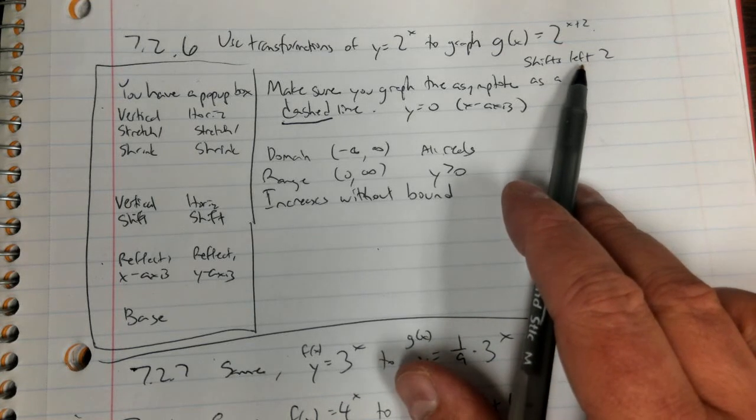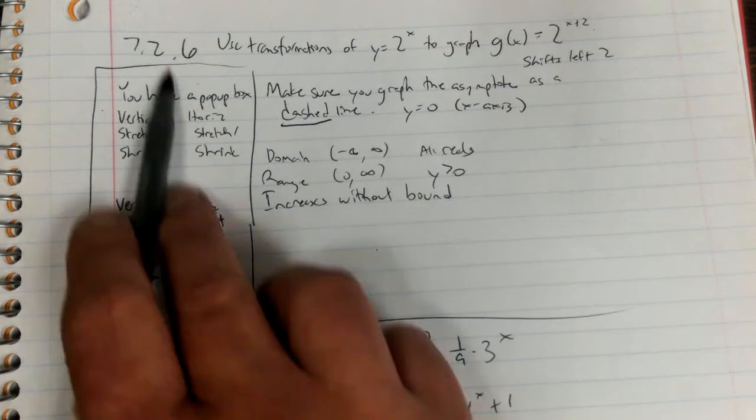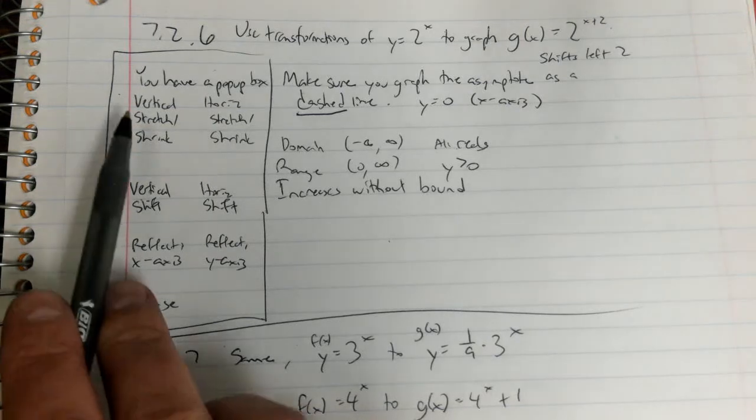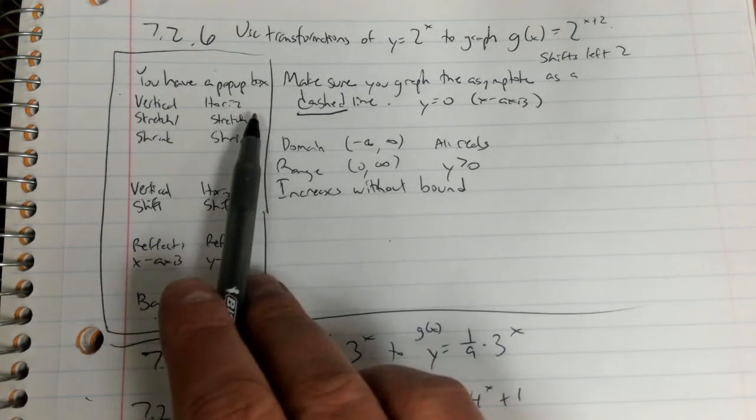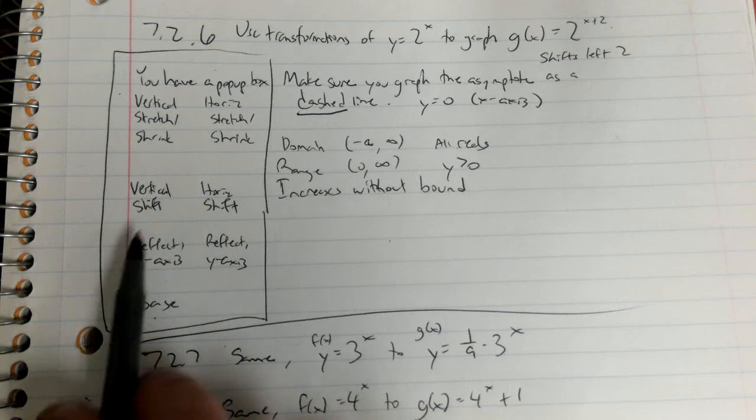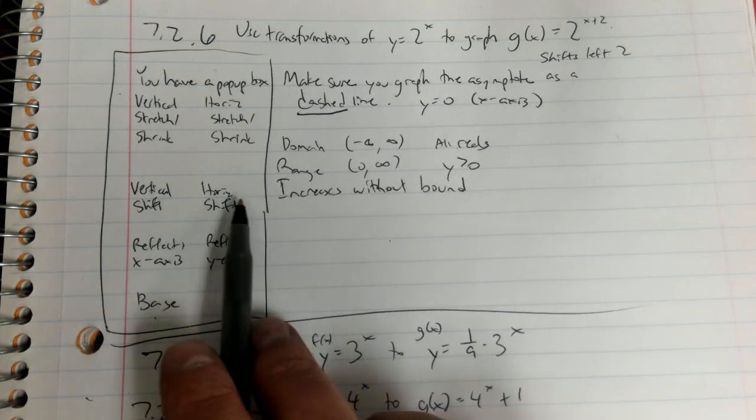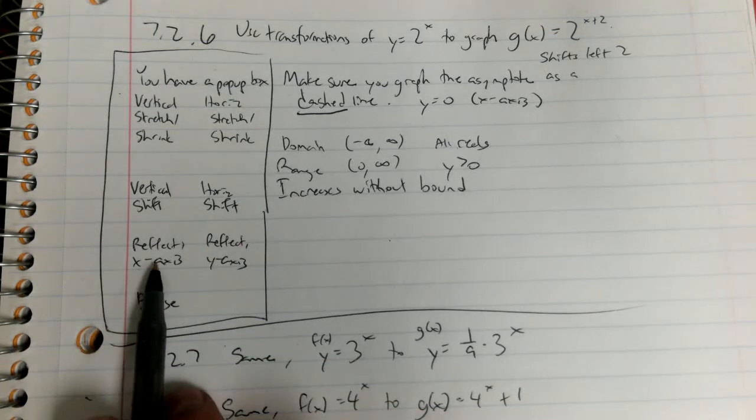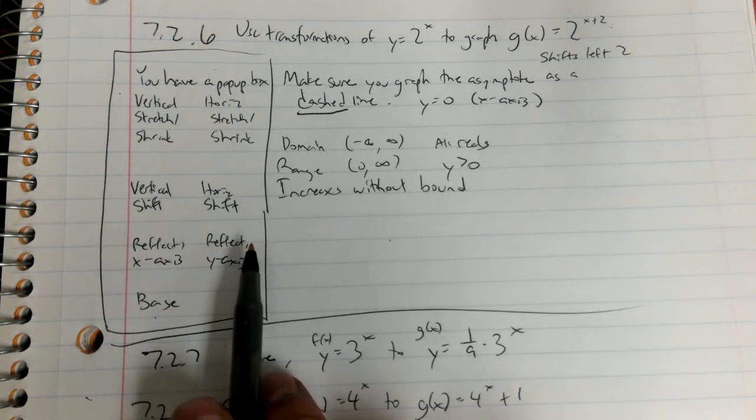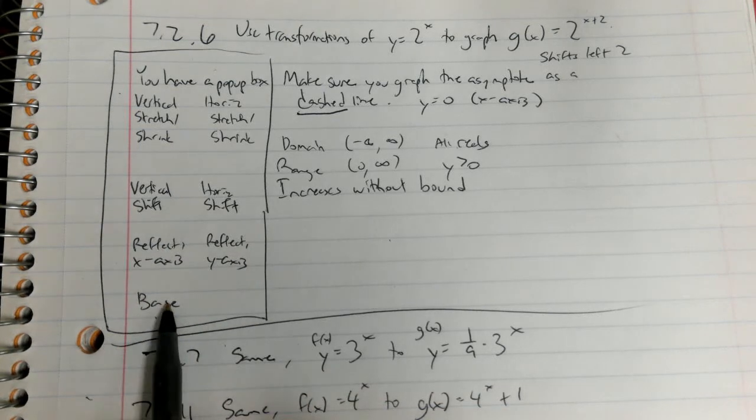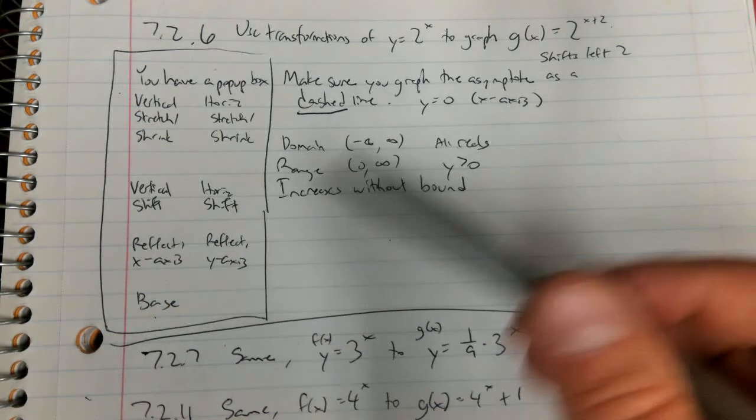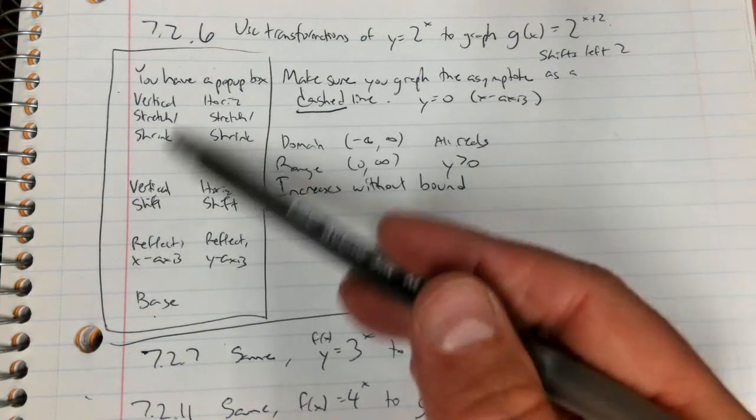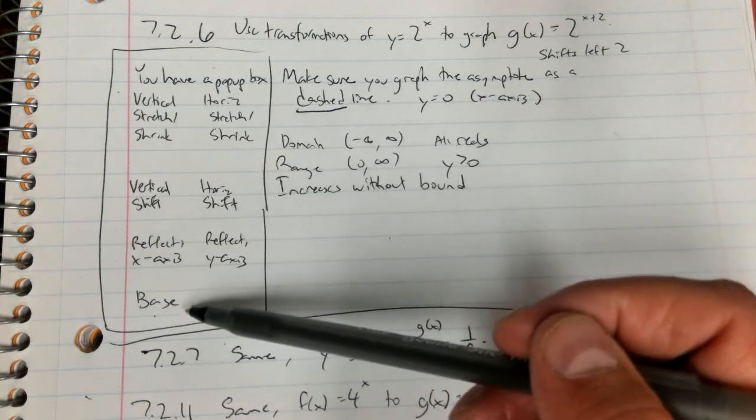The other thing which you may not be used to is this part over here. You have a pop-up box which has the vertical stretch or shrink, a horizontal stretch or shrink, a vertical shift where you could put a number, a horizontal shift where you could put a number, you have a checkbox for reflect the x-axis and for the y-axis, and then the base. As an example, on the base it'd be 2 on this one because it's 2^x. So you have lots of options here, of course you don't use all of them, just whatever is appropriate.